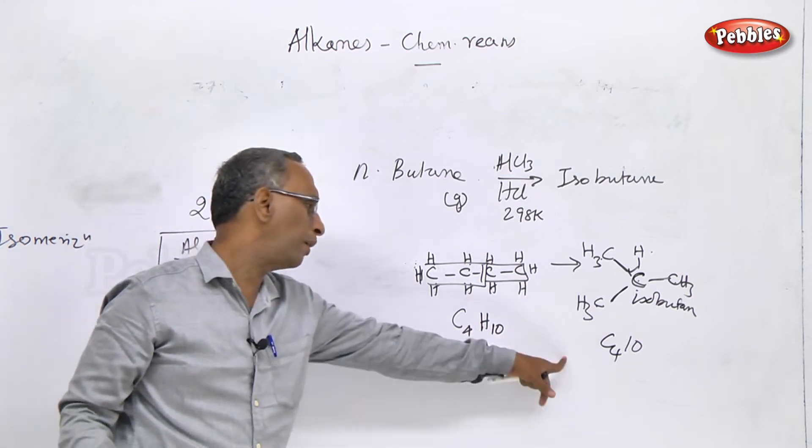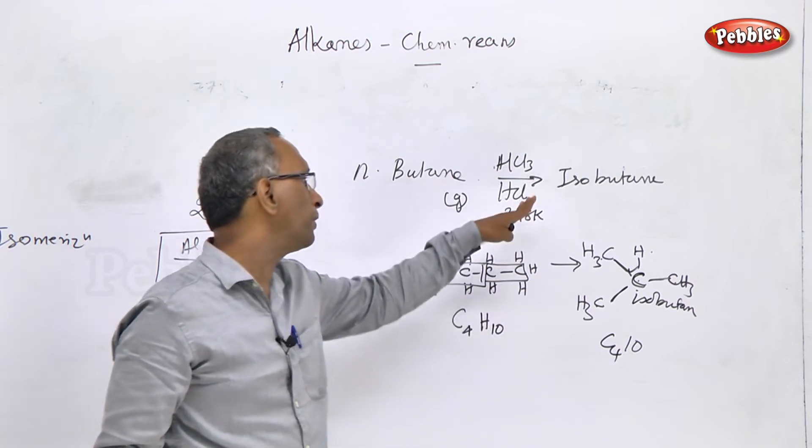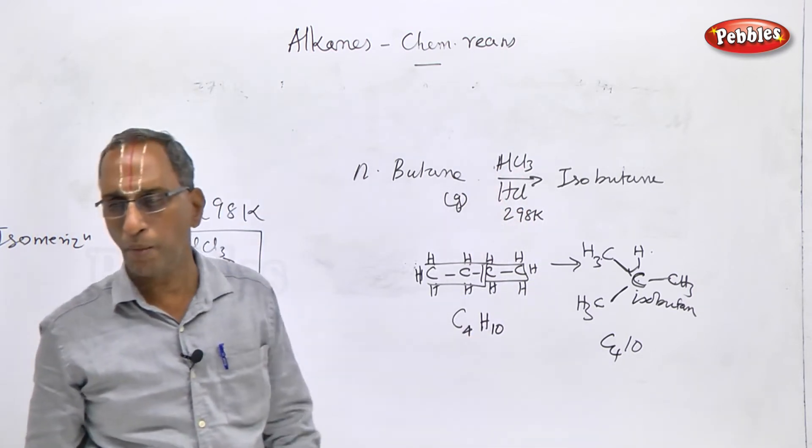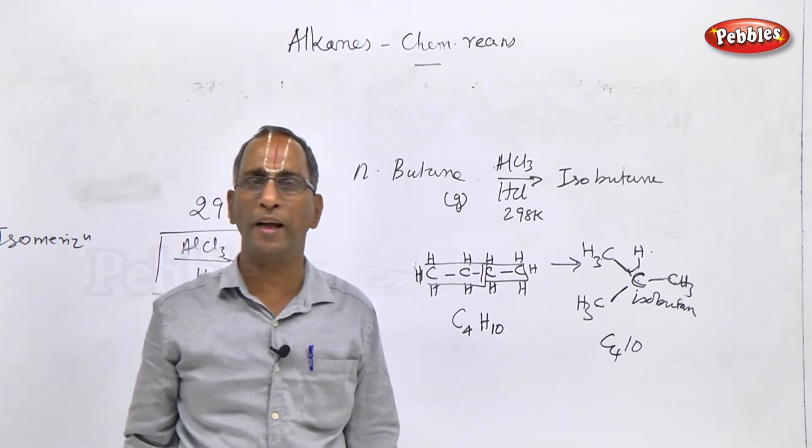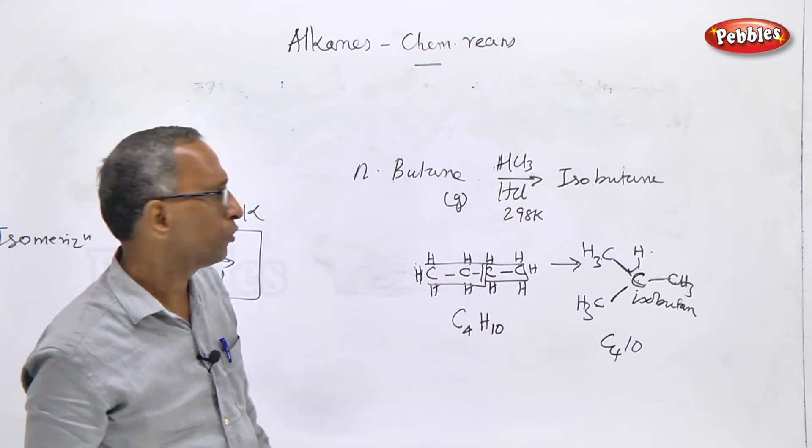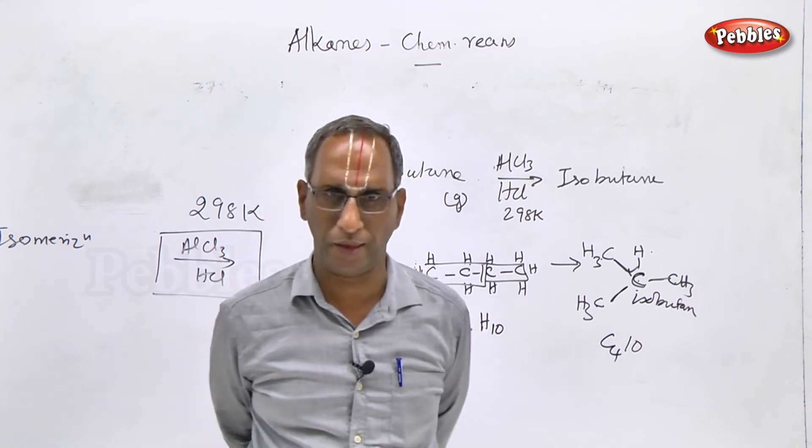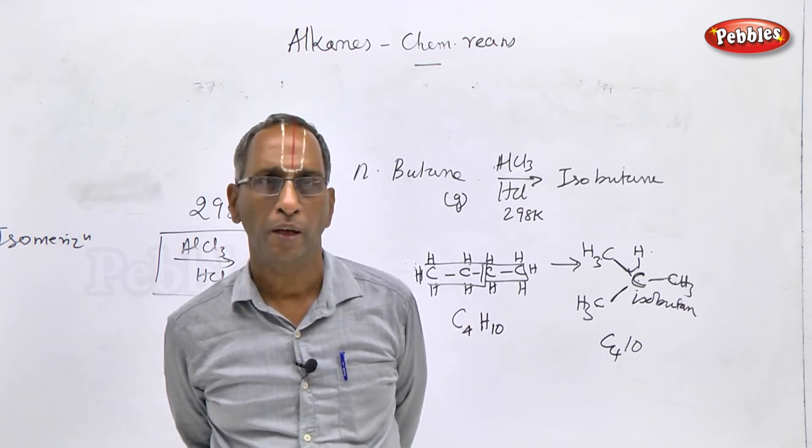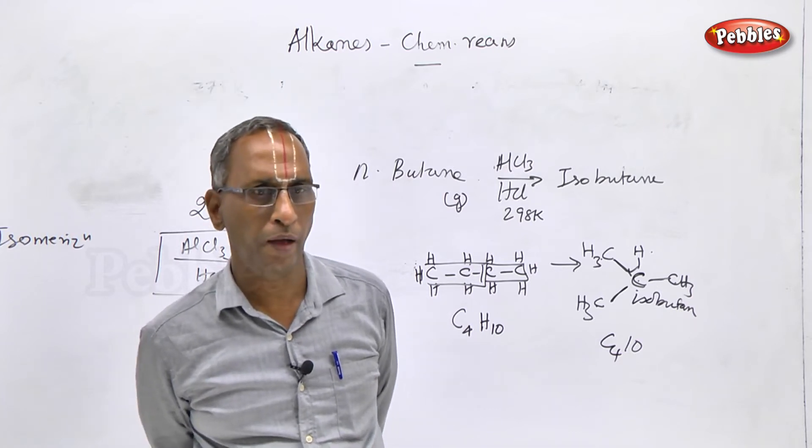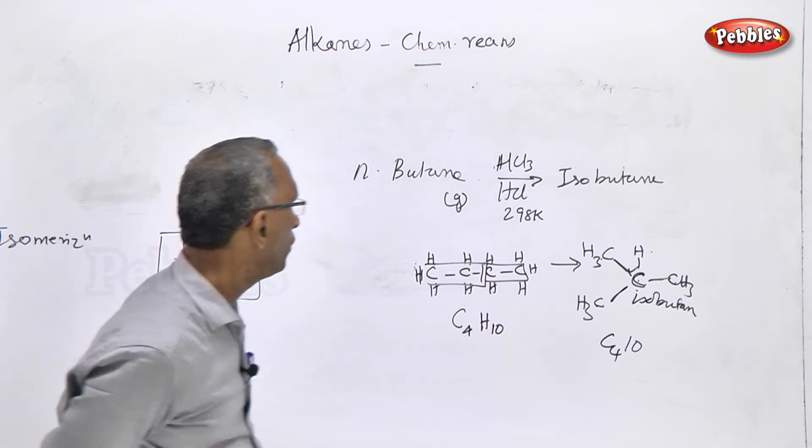So isobutane is formed. N-butane is converted to isobutane at 298 Kelvin in the presence of aluminum chloride catalyst and hydrogen chloride promoter. Isomerization is an important reaction. These are the important reactions of alkanes: combustion, halogenation, catalytic pyrolysis, and isomerization.